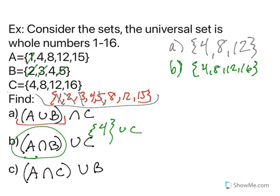Let's go to letter c, where it says (a and c) or b. Now we want to figure out what do a and c have in common. Well, they have a 4 and an 8 and a 12. 4, 8, and 12 are in a and c.